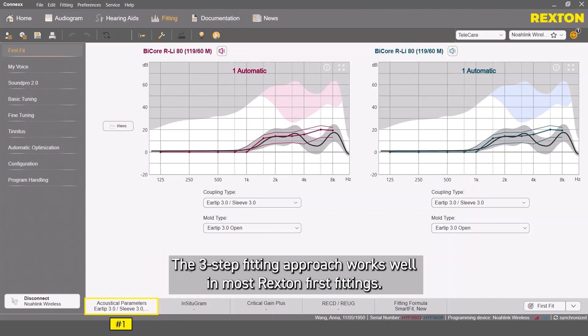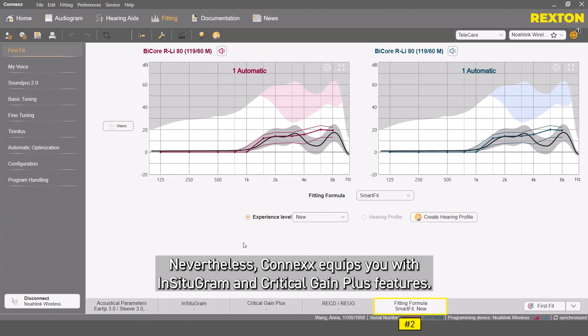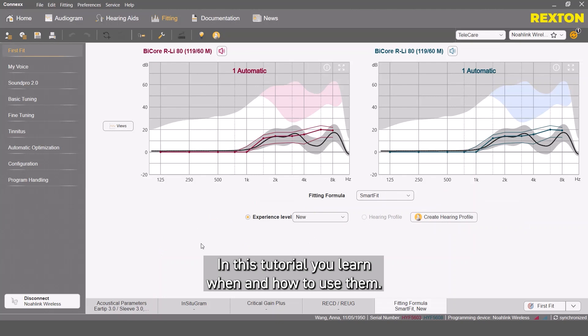The three-step fitting approach works well in most Rexton first fittings. Nevertheless, Connex equips you with Incitogram and Critical Gain Plus features. In this tutorial, you'll learn when and how to use them.